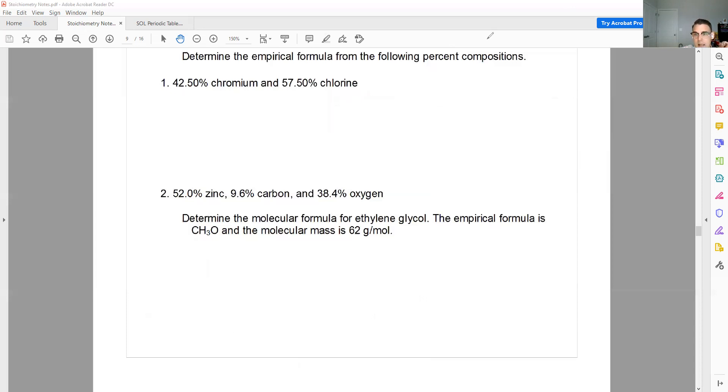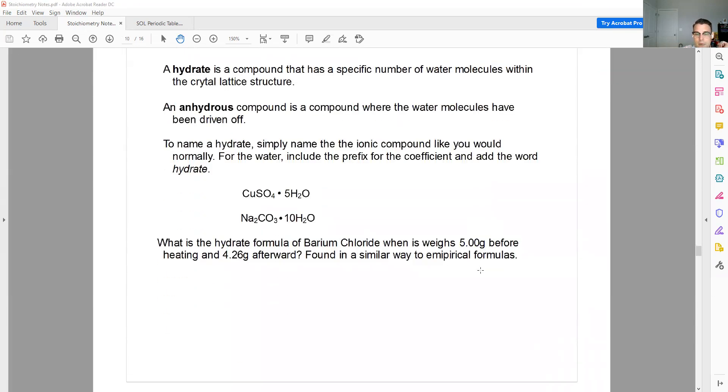Okay, last thing here, and that's going to be talking about a hydrate. A hydrate is a compound that has a specific number of water molecules within their crystal lattice structure. So we talked about ionic compounds have a crystal lattice structure, a set 3D pattern. Well, within hydrates, in between the spaces between those ions, water molecules fit. And that would be referred to as a hydrate. Different compounds can hold different amounts of water. An anhydrous compound is a compound where it used to be a hydrate, but we've driven off all the water. So we heated it up and all of the water has escaped, and now we have just the anhydrous, the compound by itself.